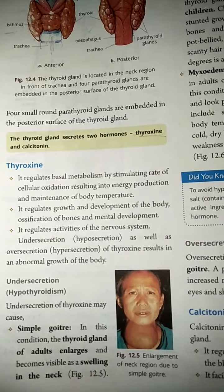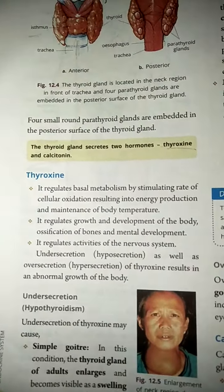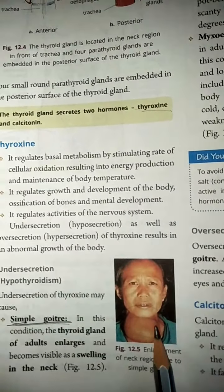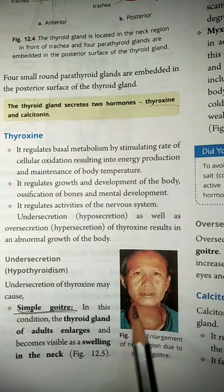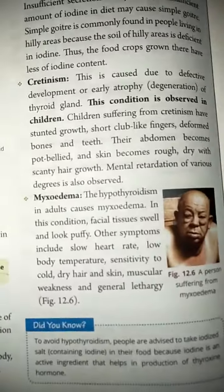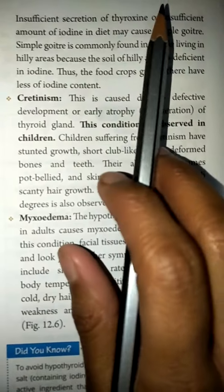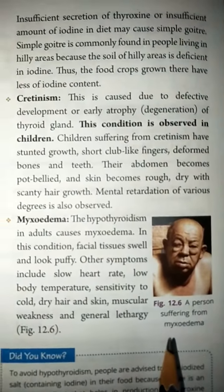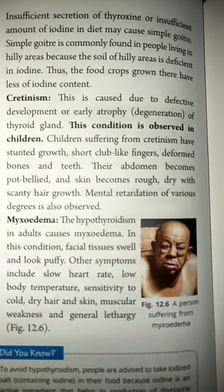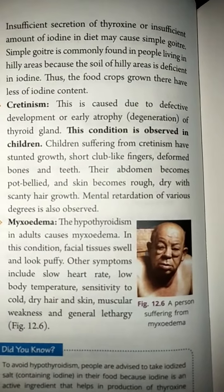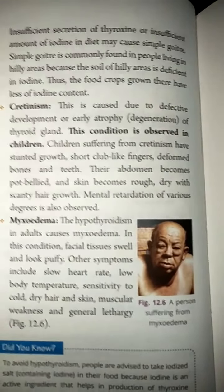If there is undersecretion of thyroxine hormone, different diseases can occur. The first is simple goiter — the thyroid gland grows and causes swelling in the neck. This happens when thyroxine hormone is insufficient. If iodine in our diet is reduced, thyroxine secretion is reduced. In this condition of simple goiter, we need to eat iodine salt.